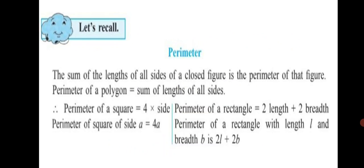Let's recall. The perimeter of a closed figure is the sum of the lengths of all its sides. So the perimeter of a polygon equals the sum of the lengths of all sides. Therefore, the perimeter of a square equals 4 times the side. A square has 4 equal sides, so the perimeter of a square with side A is equal to 4A.